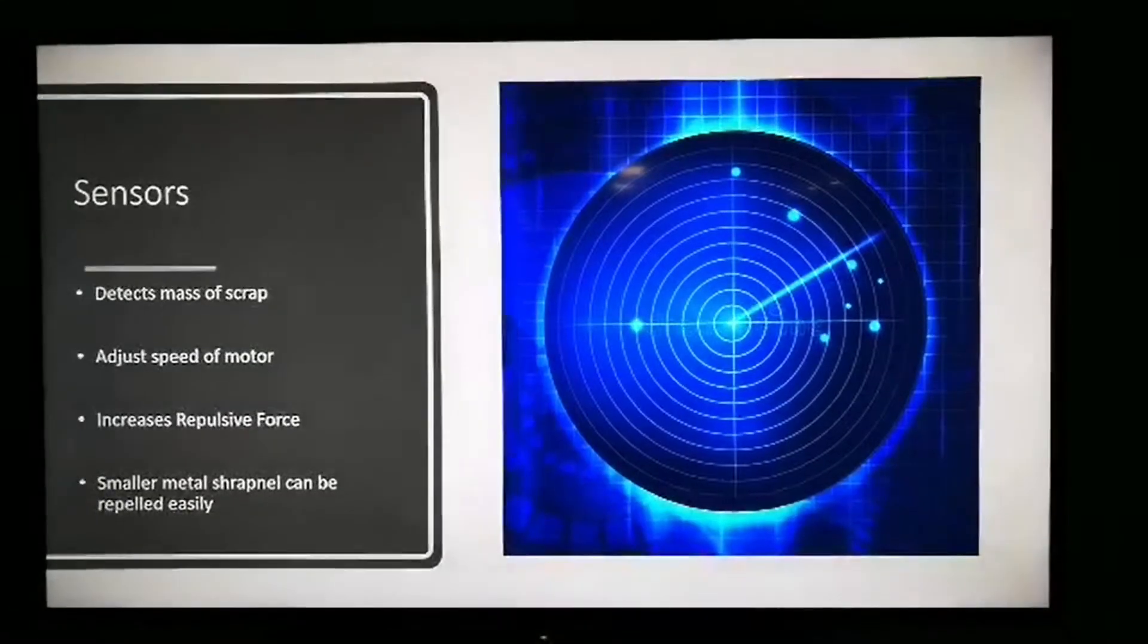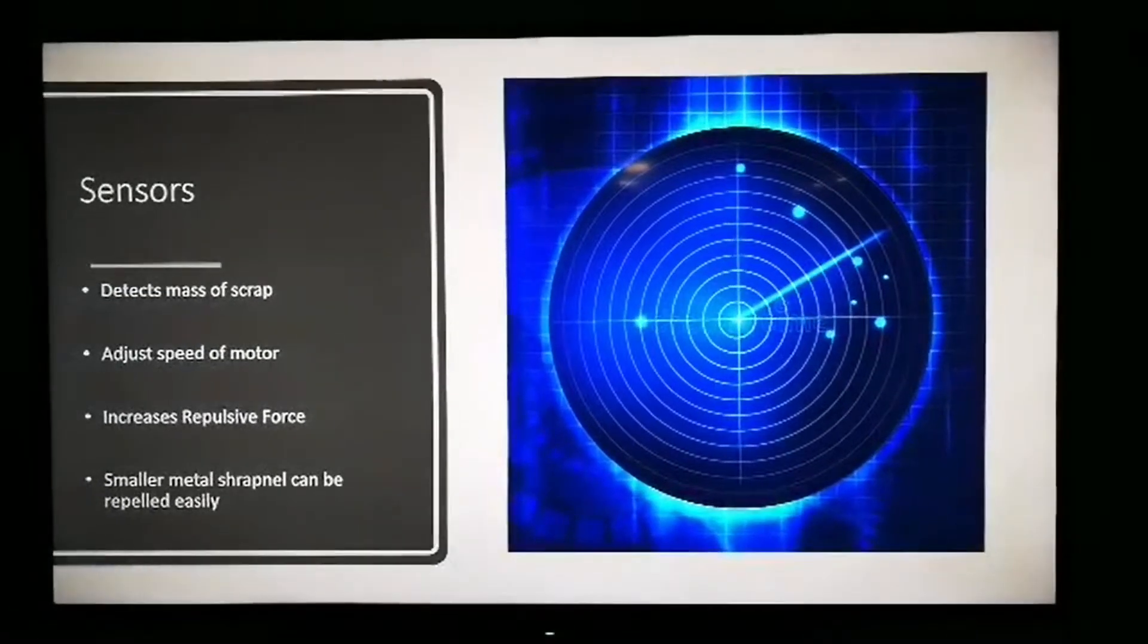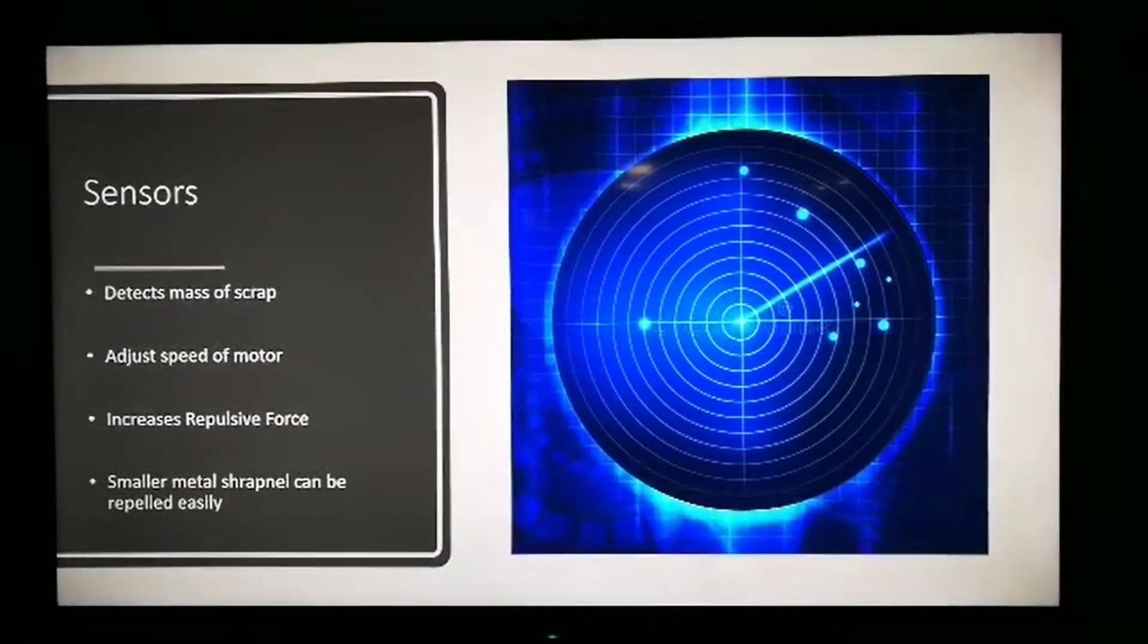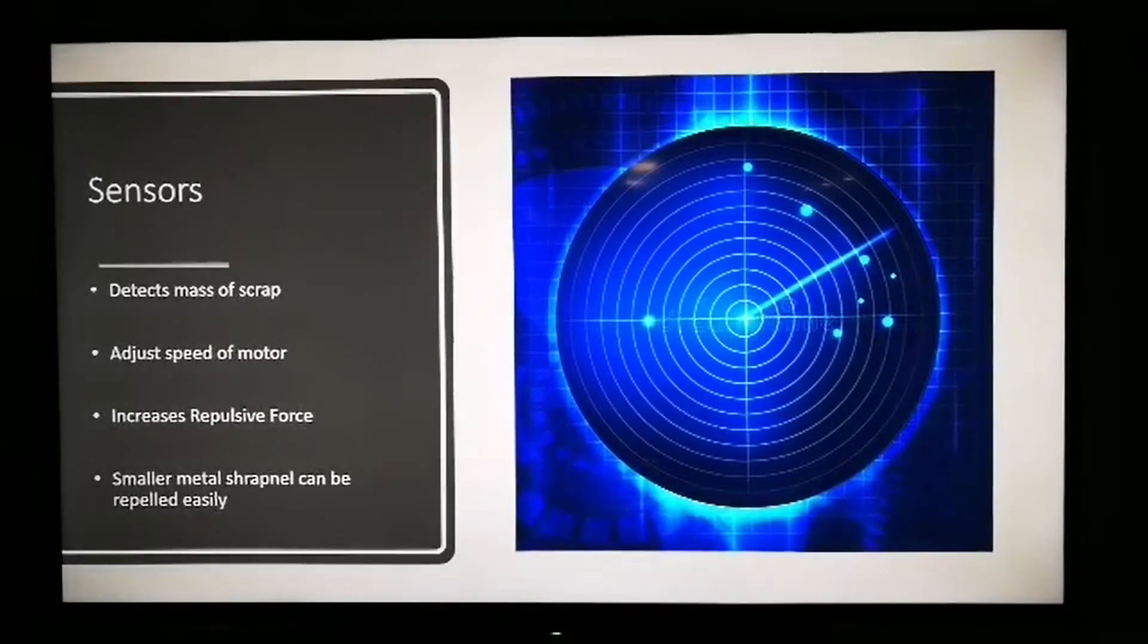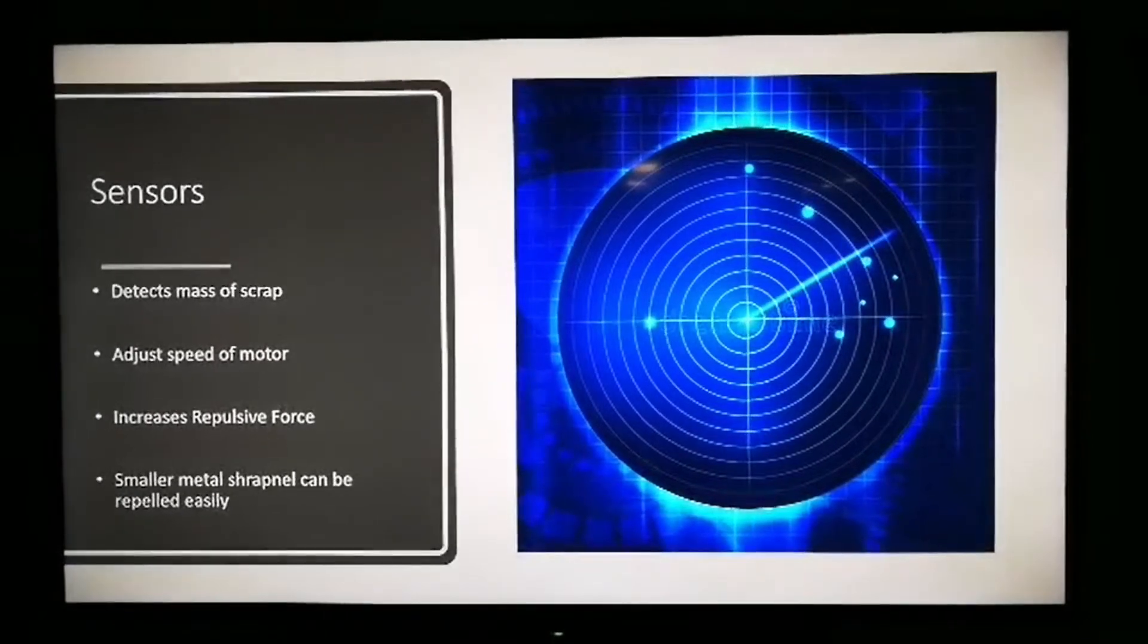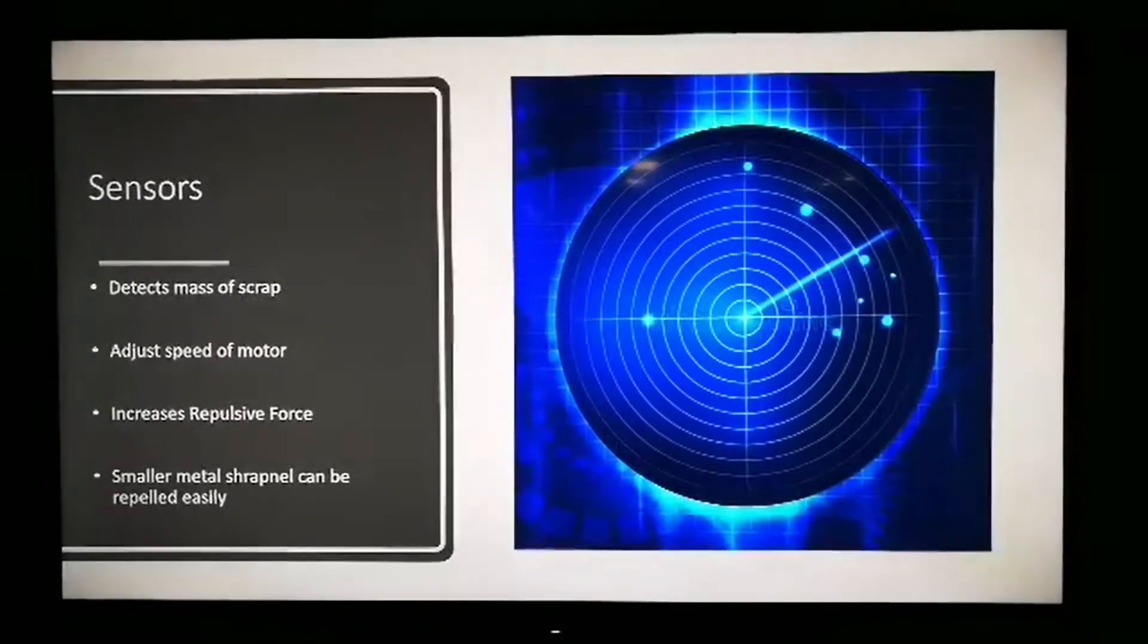Lastly, sensors can also be installed to detect the mass of different types of scrap. Then the speed of the motor can be adjusted accordingly to increase the repulsive force, so that smaller metallic scrap can be repelled easily.